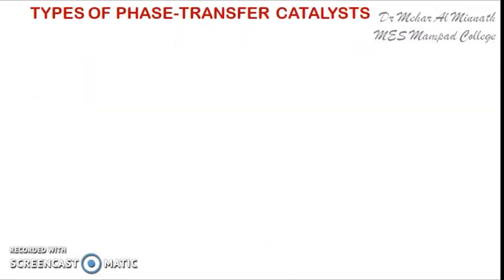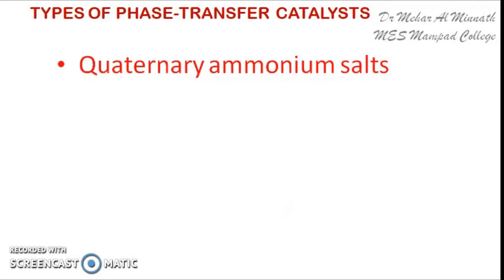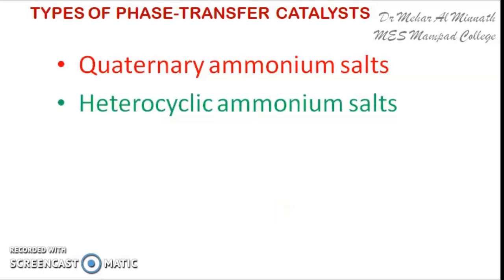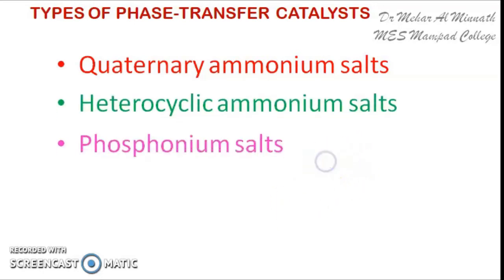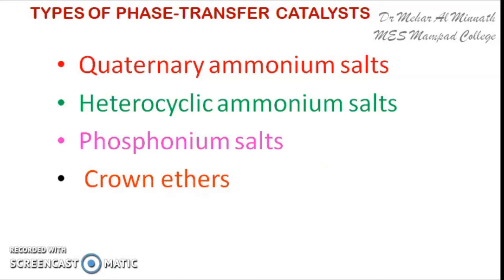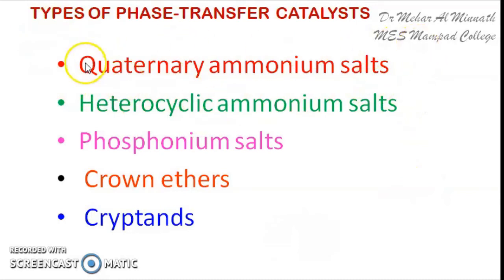Now coming to the types of phase transfer catalysts. There are different types of PTCs: we have quaternary ammonium salts, heterocyclic quaternary ammonium salts, phosphonium salts, crown ethers, and cryptands — basically five types of phase transfer catalysts. Among these, the quaternary ammonium salts are very much in use because they are cheap and easily available.